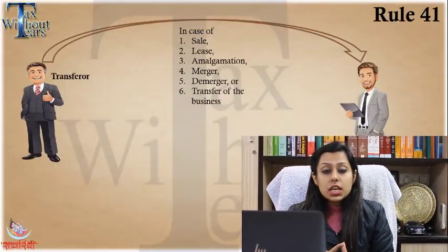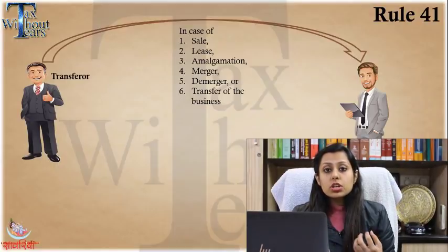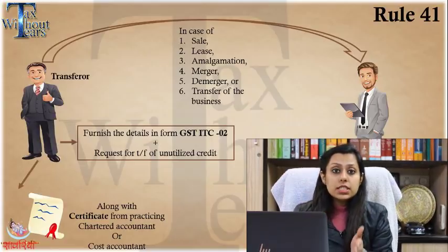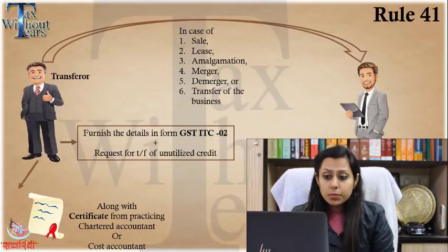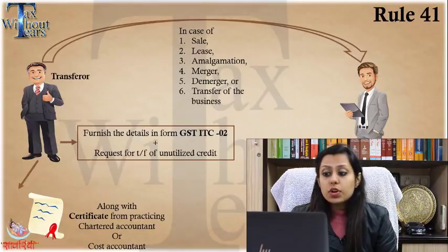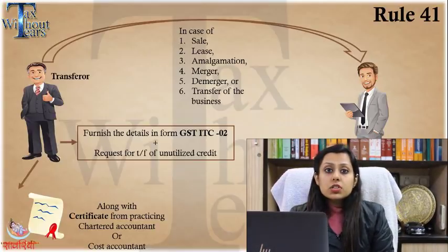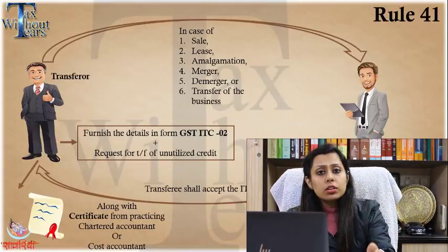Rule 41 applies when the transferor transfers goods, services, or capital goods to the transferee in case of sale, merger, demerger, or amalgamation. The transferor must furnish the details in Form GST ITC-02 on the common portal and request transfer of the unutilized credit to the transferee. The transferee will accept this on the portal. Along with this, a CA certificate or a cost accountant certificate is also required.